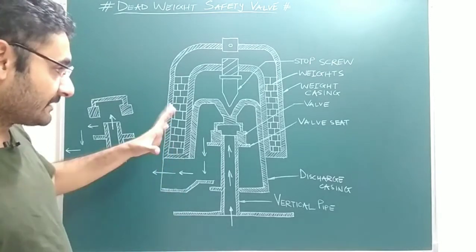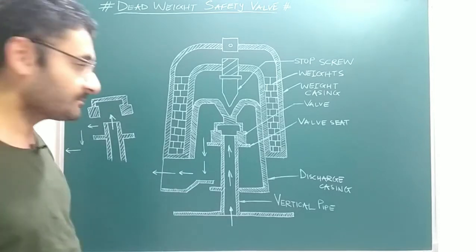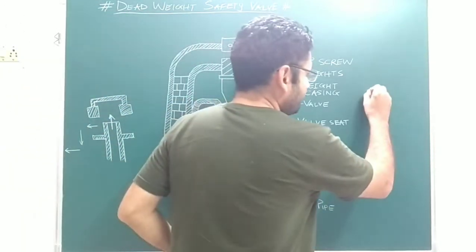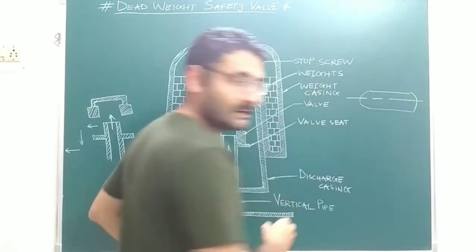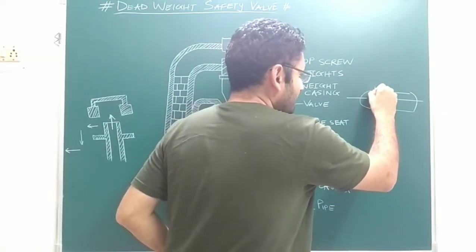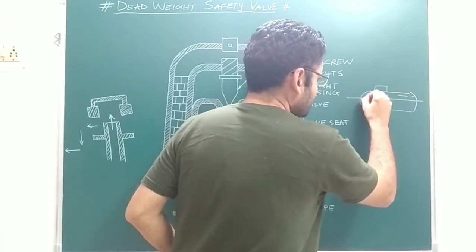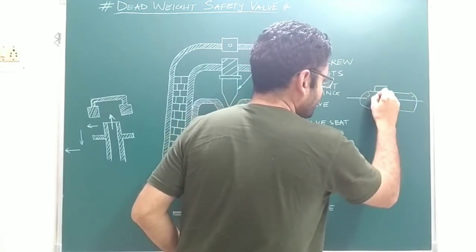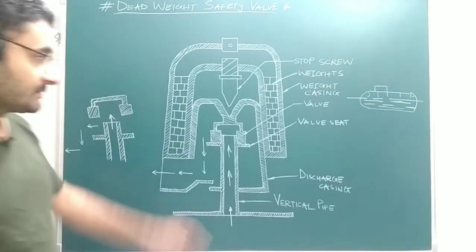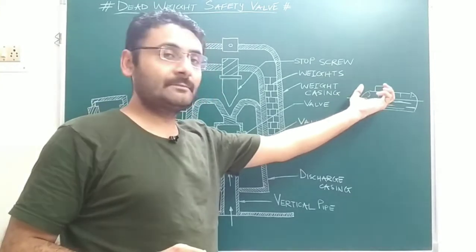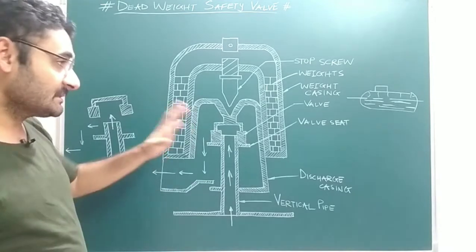Number one: the dead weight safety valve is a mounting of the boiler, and that valve is located at the top side of the boiler at the steam portion. For example, in a horizontal fire-tube boiler, at the top side this dead weight safety valve is located at the steam portion, where the upper portion has steam and below that portion water is present.